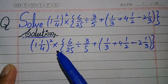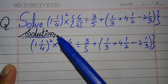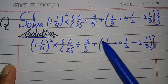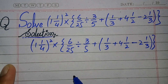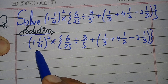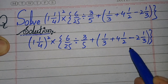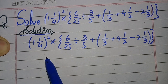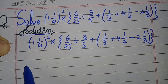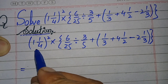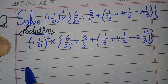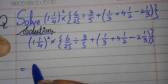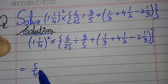Let's start the video. First of all we will write the solution and copy this question. In the next step we will change the mixed fraction in the question to the improper fraction. So it will become: 4 times 1 is 4, 4 plus 1 is 5, giving us 5 by 4.